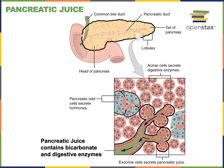Pancreatic juice contains bicarbonate and digestive enzymes. The bicarbonate is a base that can react with the low pH acidic chyme in order to help neutralize the pH of chyme. So bicarbonate will raise the pH of the contents of the duodenum, neutralizing the acid that's coming from the stomach.